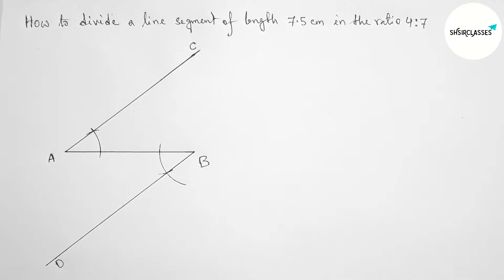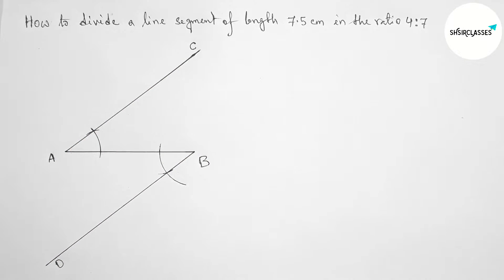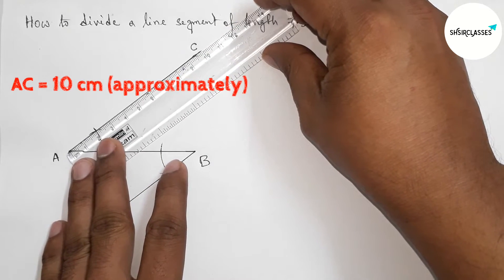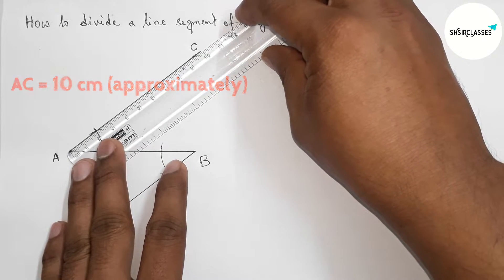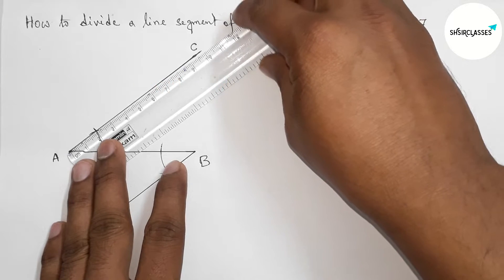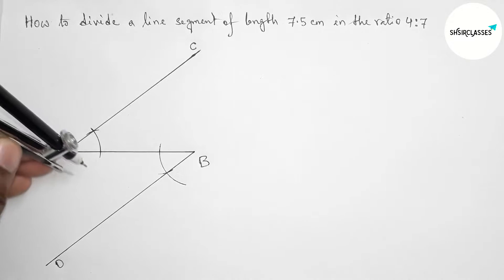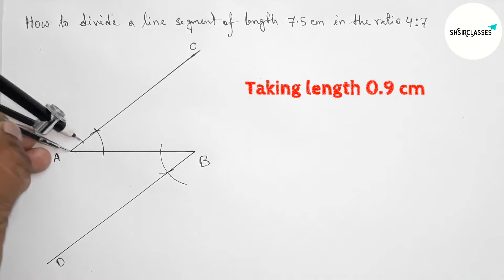Joining this line — we get the same angle, giving us two parallel lines AC and BD. Now measuring the length of AC: the length of AC is approximately 10 centimeters.